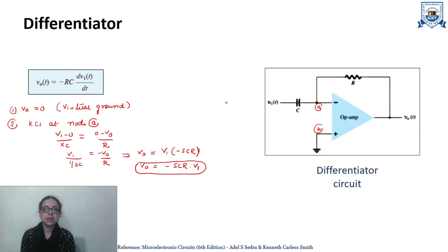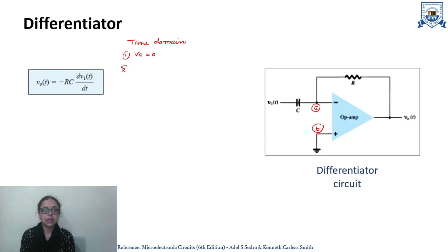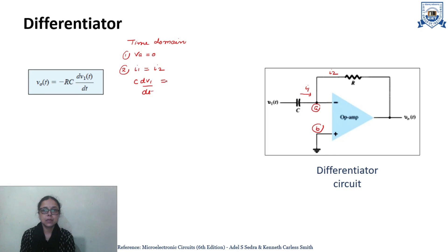The same circuit can be analyzed in the time domain. For time domain analysis, first apply the concept of virtual ground: this is node A, this is node B, so VA equals 0. Second, apply KCL at node A — I1 equals I2. I1 is given by C times dV1/dt, and I2 is minus V0 divided by R. So V0 equals minus RC times dV1/dt.